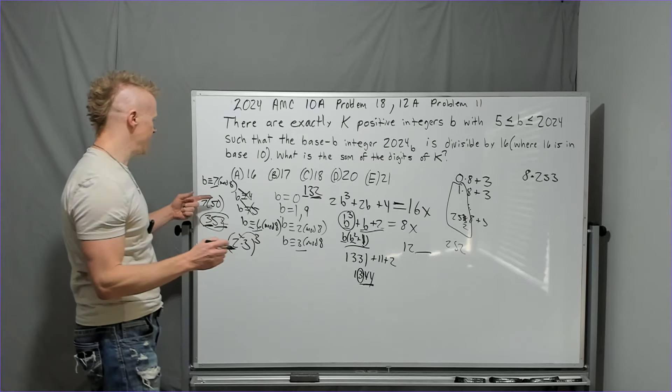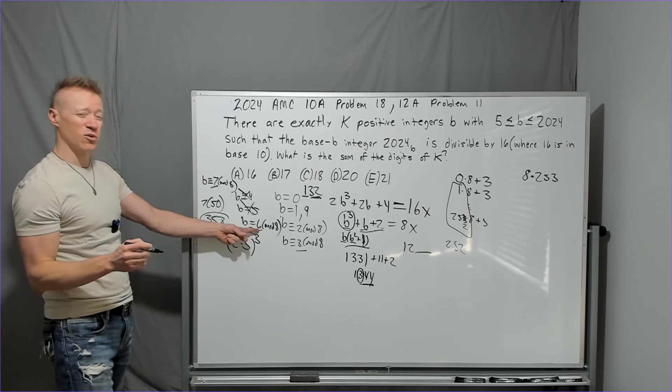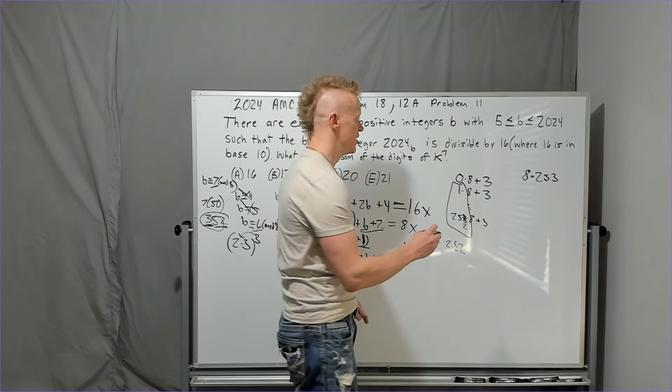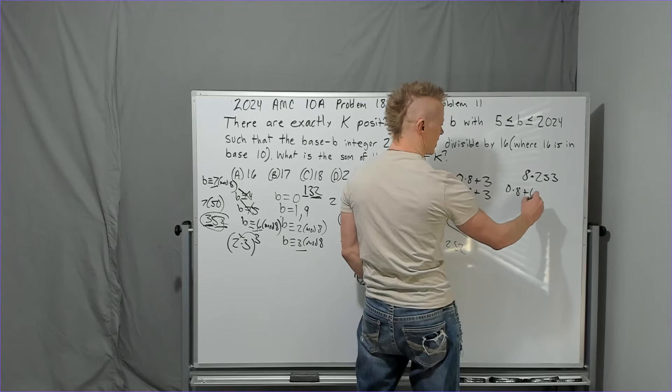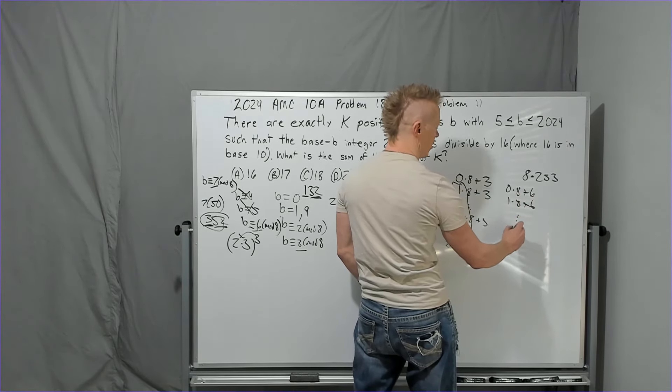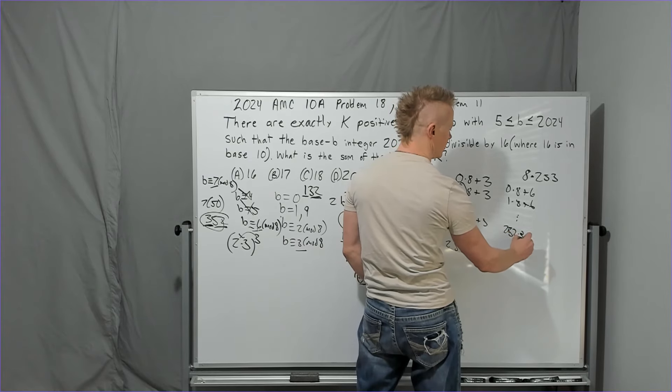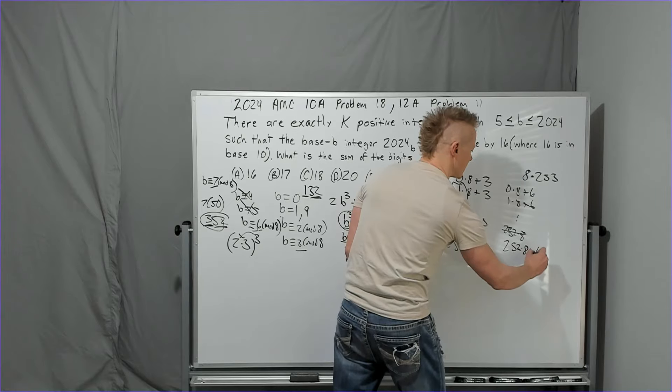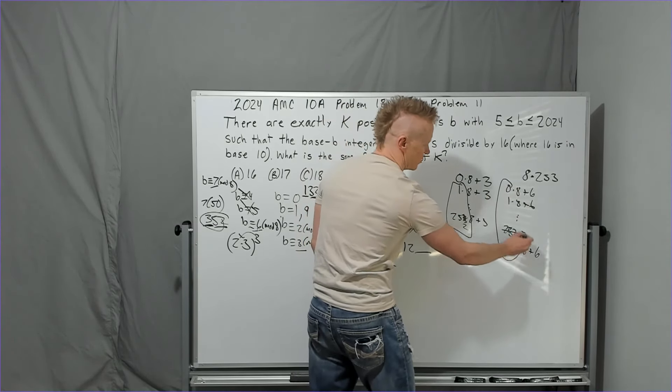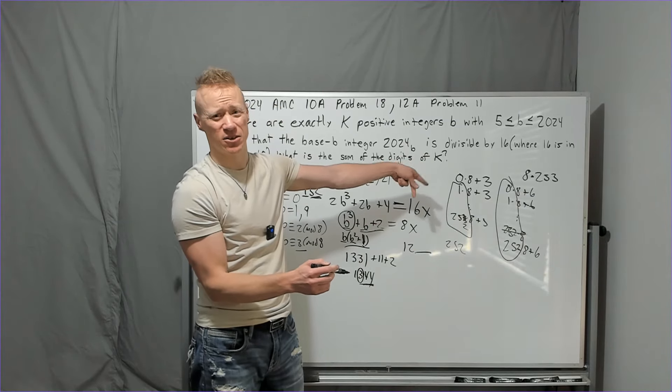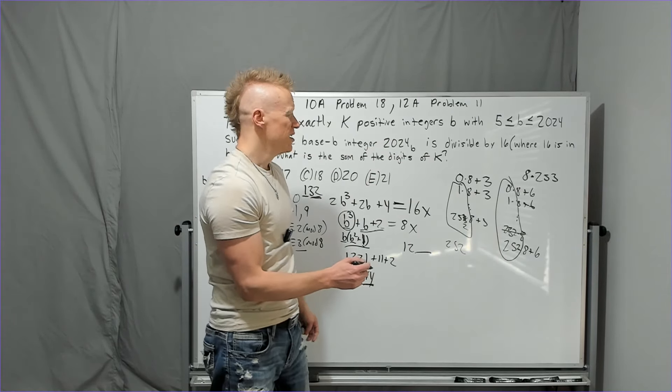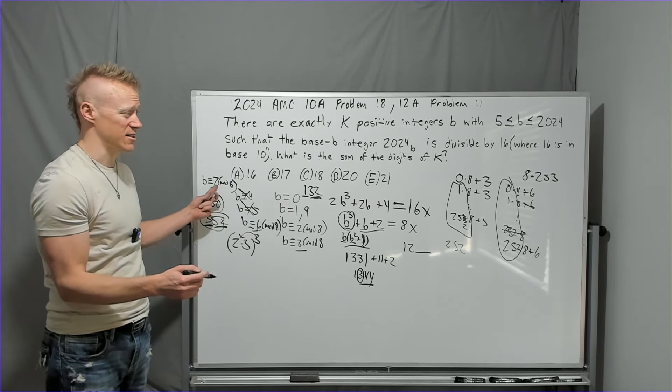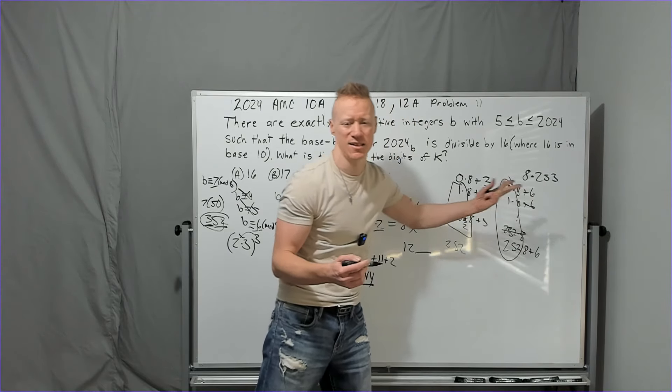Now, the other ones with the remainder 6 or residue 6, residue 7, those are both going to be fine because they're both already above. So you're going to get all of those from 0 times 8 plus 6, 1 times 8 plus 6, all the way to 252. 252 times 8 plus 6. So you're going all the way from 0 to 252. 252 minus 0 plus 1 is 253. So if this is going to work with 253, and that's going to give you 253 cases for the same reason. You're just changing these 6s to 7s.